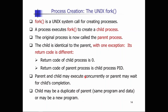Parent and child may execute concurrently, or the parent may wait for the child's completion. If the parent has nothing to do, it may remove itself from the ready queue by using the wait system call, waiting for the child to terminate. Or it can run concurrently with the child process — both executing at the same time. The child may be a duplicate of the parent, a perfect clone with the same program and data, or it may run a new program by using the exec system call.